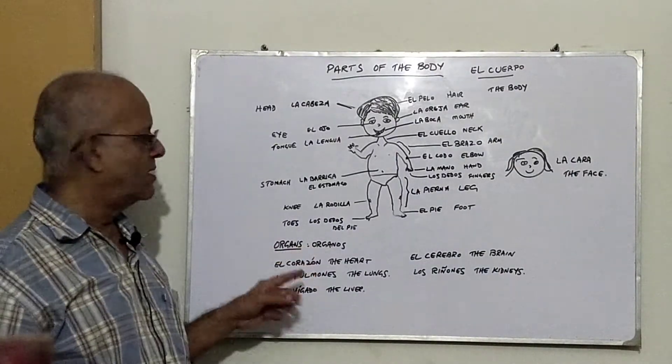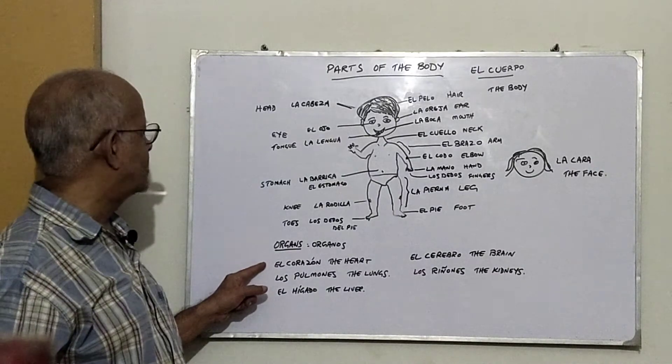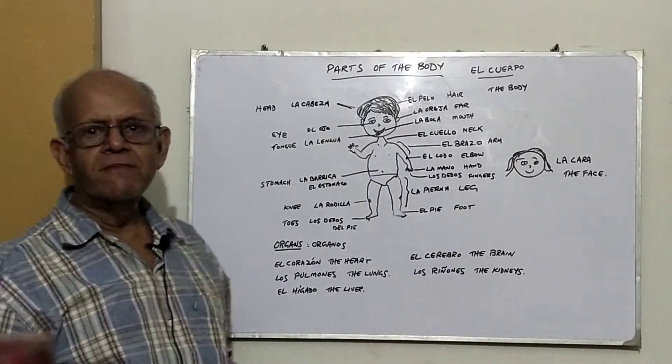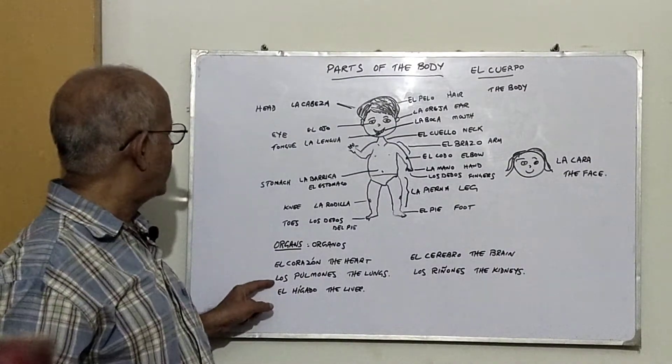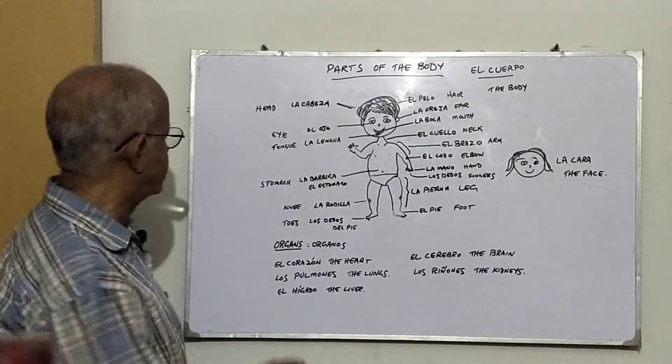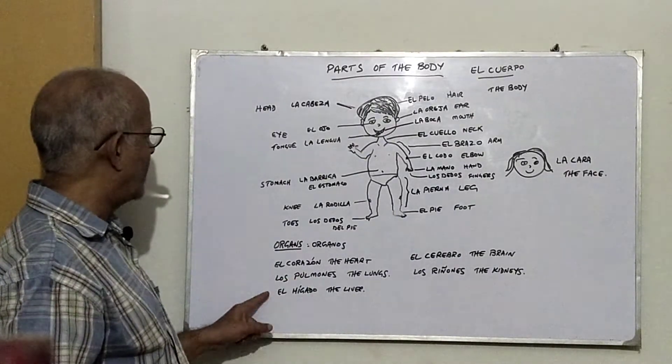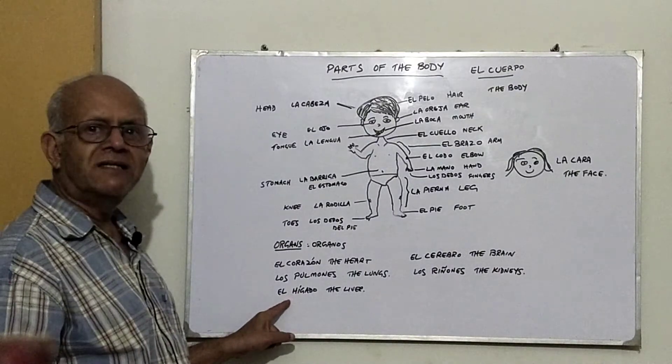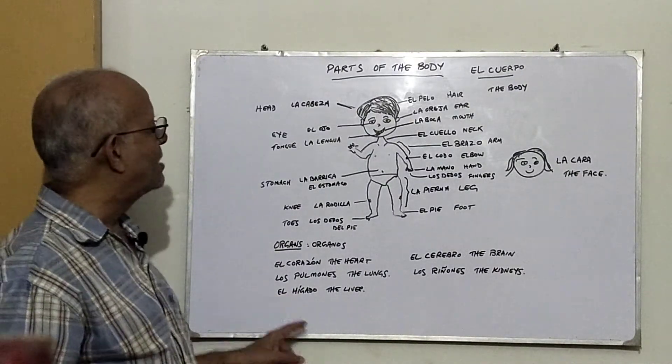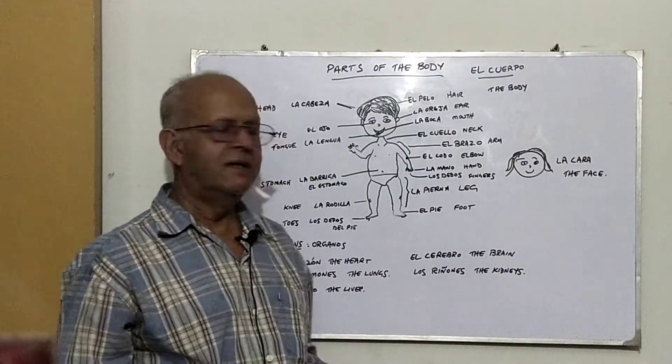Now some internal organs - órganos, organs of the body. The most important one is the heart - el corazón. The lungs - los pulmones. The liver - el hígado. Now remember, H's are silent in Spanish - el hígado. The brain - el cerebro.